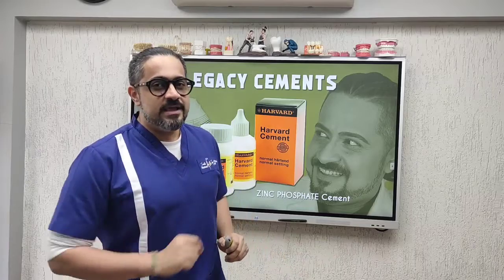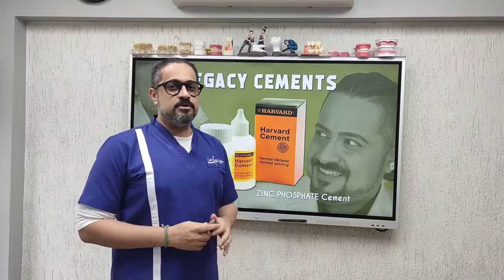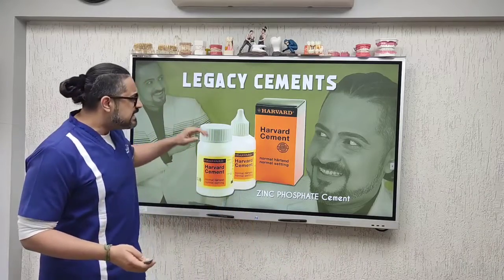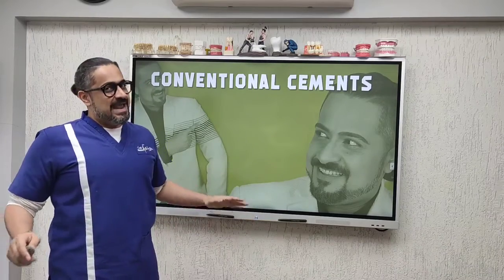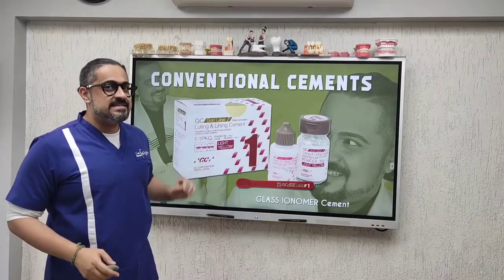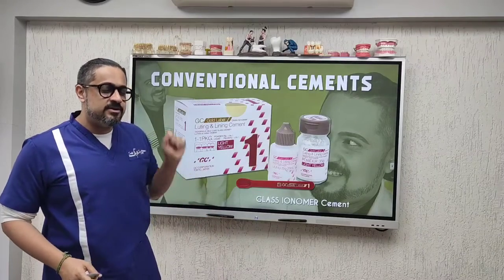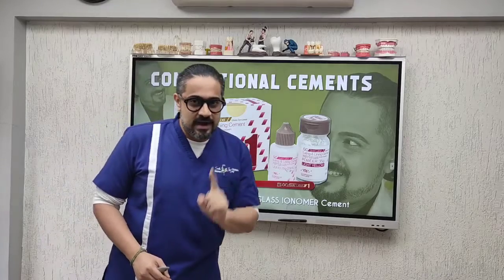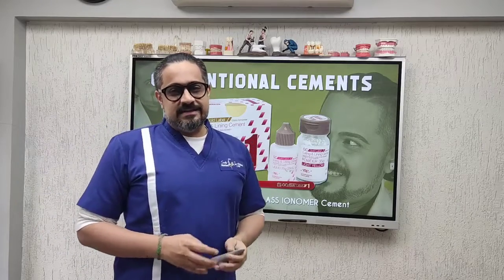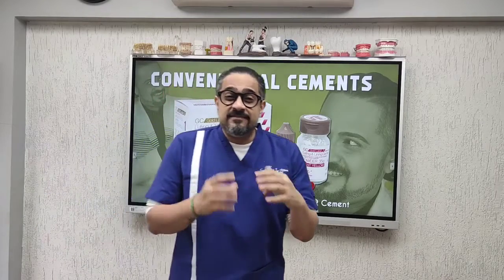Coming to the next category, which is the conventional — this is the cement that almost each one of us will have in our practices, and it is nothing but your luting GIC, or Type 1 glass ionomer cement. Very, very good; used for years and years together.